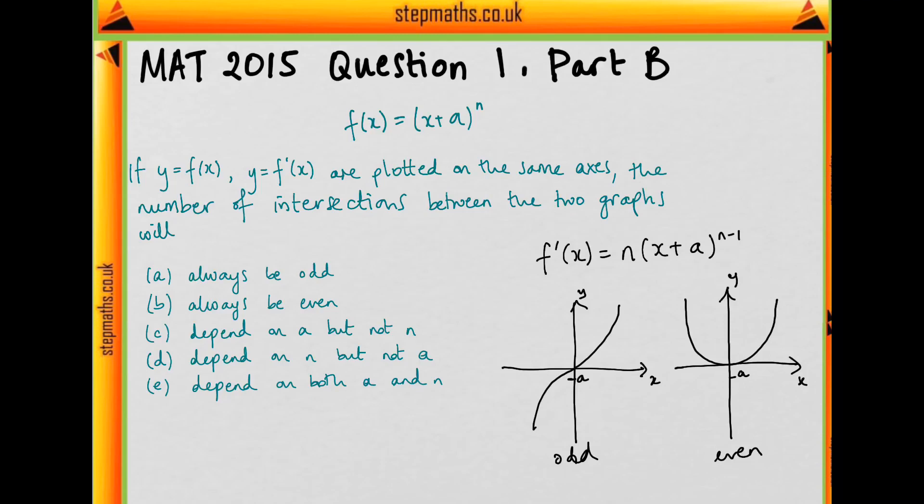So we can see immediately that there's going to be at least one intersection because they're both going to cross at this point. And also we can't have any crossings when x is less than minus a because here is above the x-axis and here is below.